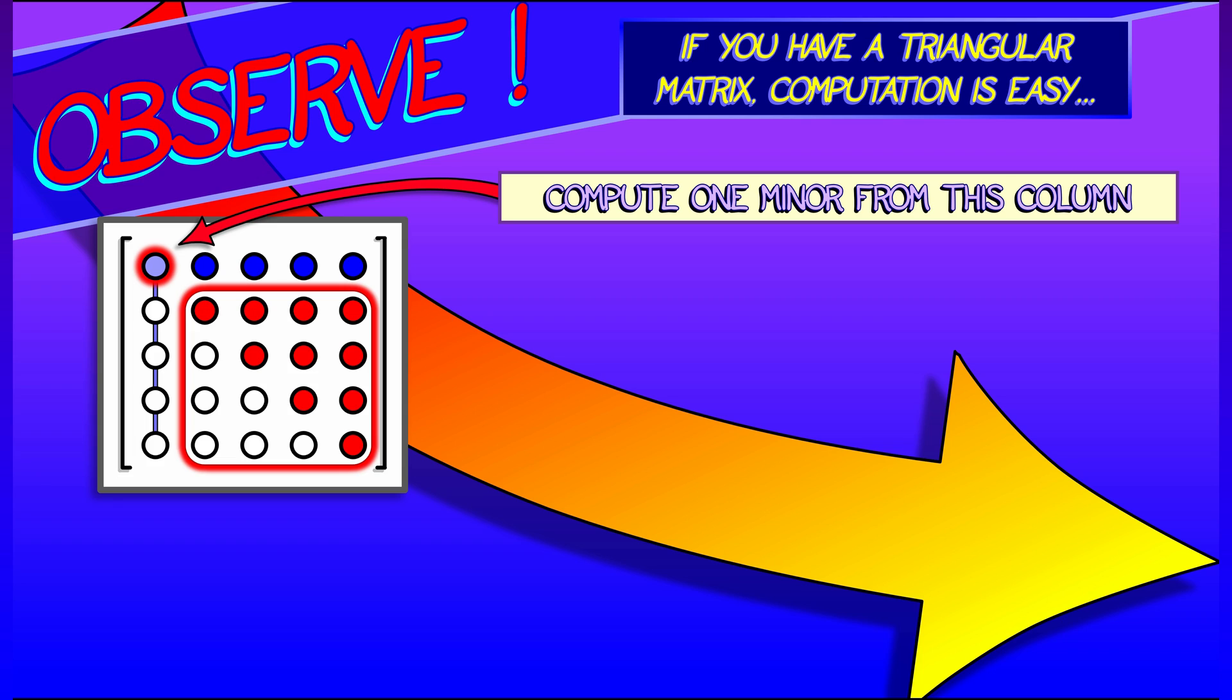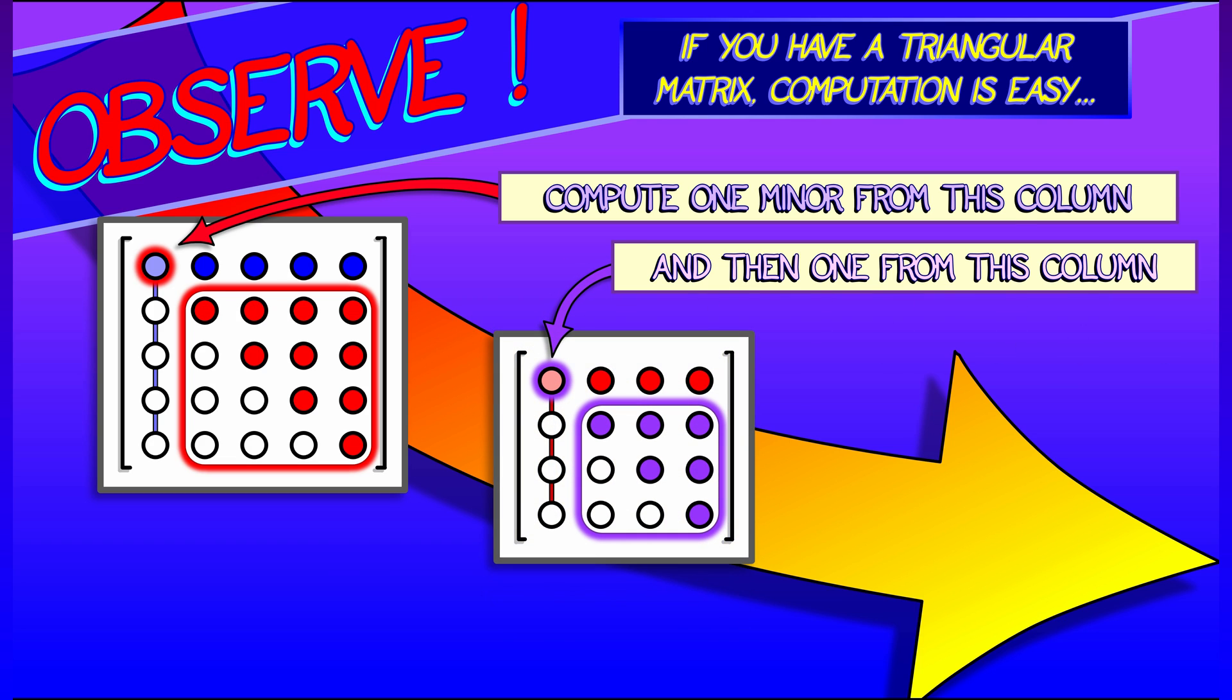We're going to be clever and do a minor expansion about the first column because that only requires the computation of one n minus one by n minus one determinant. All the others have zeros in front of them. And that n minus one square matrix determinant, we're going to expand that about the first column as well because it's still upper triangular.